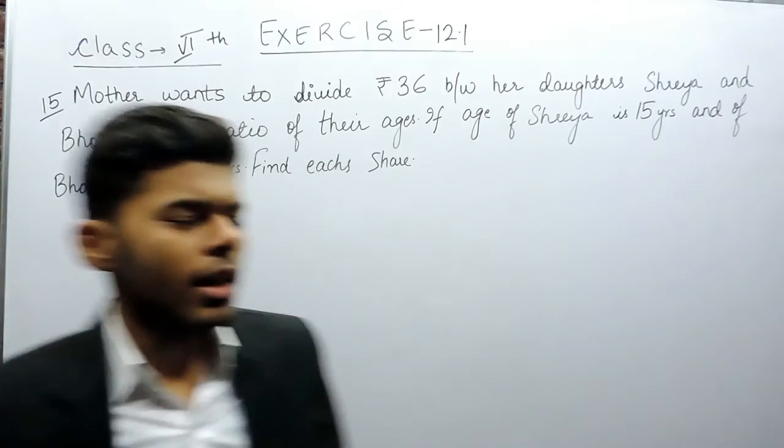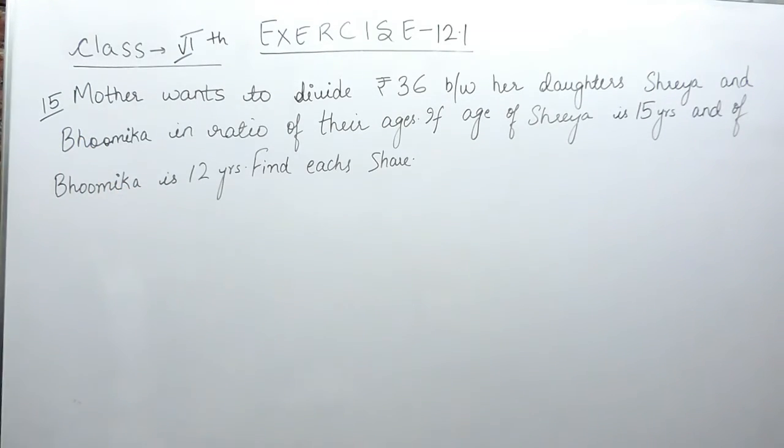Hello everyone, this is the 15th question of exercise 12.1. The question says that mother wants to divide rupees 36 between her daughters Shreya and Bhumika in the ratio of their ages. Their ages are: Shreya is 15 years and Bhumika is 12 years.